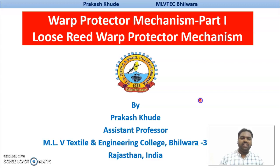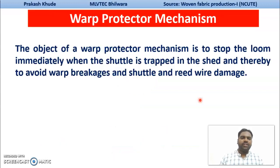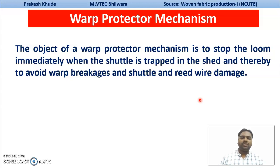We will see what is the basic function or objective of your warp protector mechanisms. Warp protector mechanisms are basically used when we need to stop your loom when the shuttle has been trapped in between the sheds. During a shuttle trap, there could be chances of multiple warp breakages, and there could also be chances that shuttle and reed warp damage can occur.